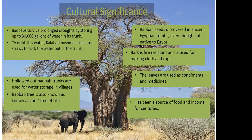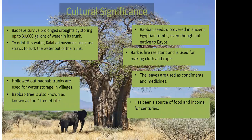The baobab has a lot of cultural significance in many places in Africa. It can survive prolonged droughts — it can store up to 30,000 gallons of water. During droughts, Kalahari Bushmen used grass straws to penetrate and suck out the water from the trunk, which is a good method for survival. The hollowed-out trunks are also good for storing water for villages. Because of this, and because of the fruit, they're often known as the tree of life. The baobab seeds have been discovered in ancient Egyptian tombs — even though they're not native to Egypt — which means they were traded to the pharaohs. The bark is fire resistant and used for making cloth and rope. The leaves are used as condiments and medicines and have been a source of food and income for centuries.